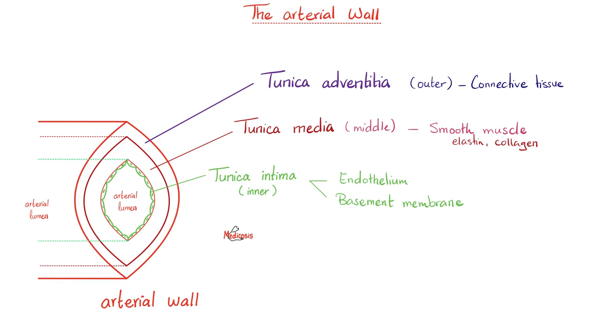Then you have tunica media in the middle. What does it have? Smooth muscles, elastin, and collagen. It's very strong. That's why arteries are stronger than veins, because they have a very thick tunica media with tons of muscles. The outermost layer is the tunica adventitia, and it has connective tissue. Your artery contains all types of tissue. There are some nerves that go to supply the artery, because sometimes you might need to vasoconstrict or vasodilate.